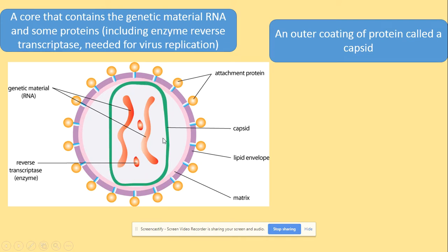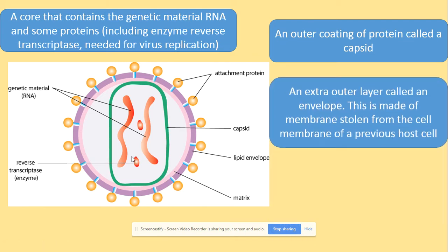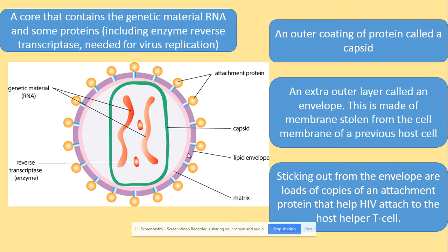The outer protein coating is called the capsid. Inside the capsid we have RNA and reverse transcriptase. There is an extra layer called the lipid envelope, and this is made of membrane stolen from the host cell. Sticking out from the envelope are the attachment proteins, which help HIV attach to the host helper T cell — the cell where HIV will replicate.